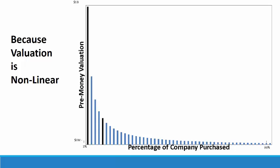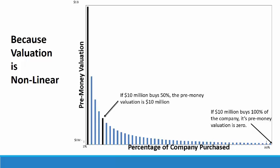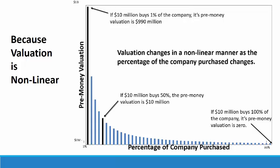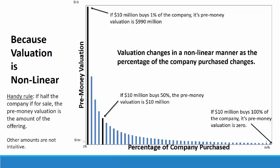This chart shows on the vertical axis the pre-money valuation and on the horizontal axis the percentage of the company purchased. For example, if $10 million buys 100% of the company, its pre-money valuation is zero. If $10 million buys 50% of the company, the pre-money valuation is $10 million. If $10 million buys 1% of the company, its pre-money valuation is $990 million. This shows that the valuation changes in a non-linear manner as the percentage of the company purchased changes. There is a handy rule, however: if half the company is for sale, the pre-money valuation is always the amount of the offering. Other amounts are not intuitive.